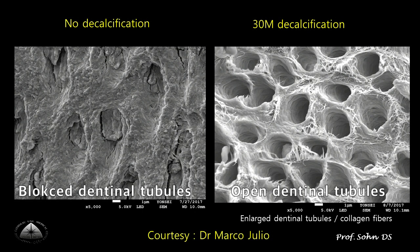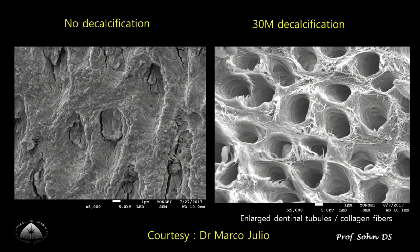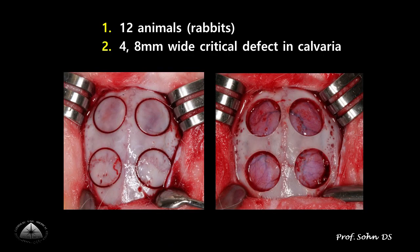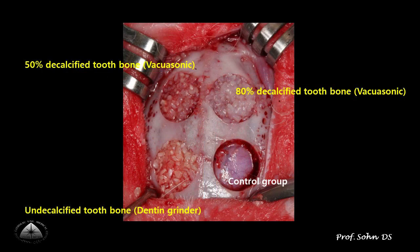After proper decalcification of dentine, diverse osteoinductive proteins are released in peritubular dentine and inside open dentinal tubules. I made four critical bone defects on an animal's calvaria to evaluate bone formation between decalcified dentine and undecalcified dentine.